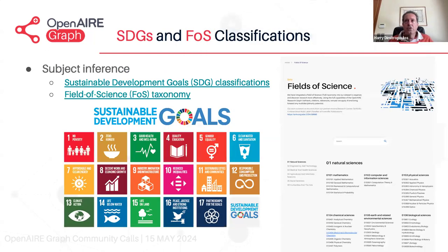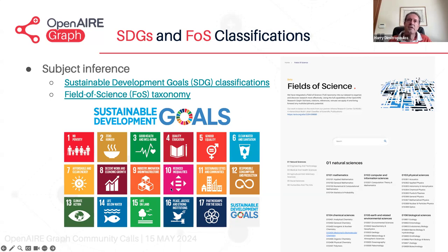I'll briefly mention the classifiers recently added. We have developed a classification scheme for the United Nations Sustainable Development Goals, which helps view contributions of research towards complex challenges like climate change, biodiversity loss, pollution, and poverty reduction — anything covered by the SDGs. We also have our fields of science classification. These are used in some of our services to enrich the services.